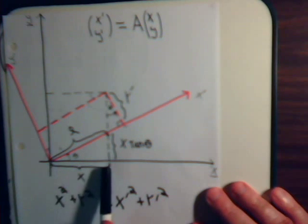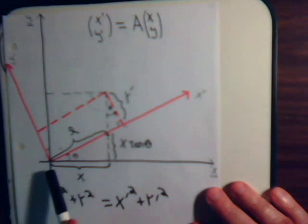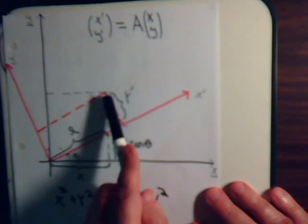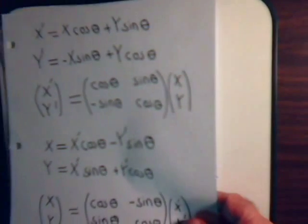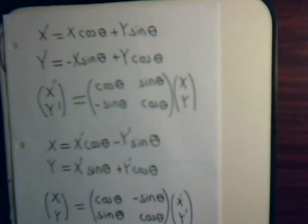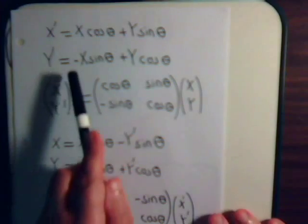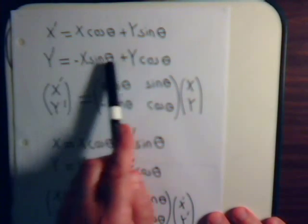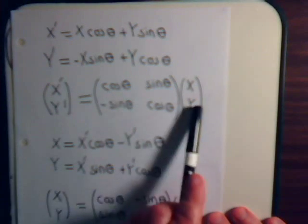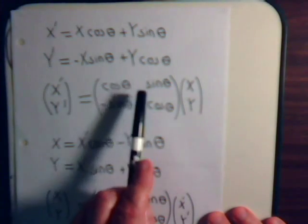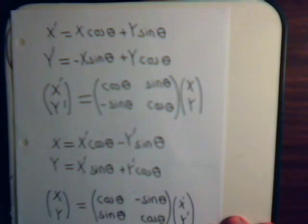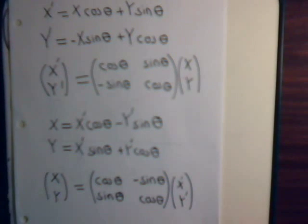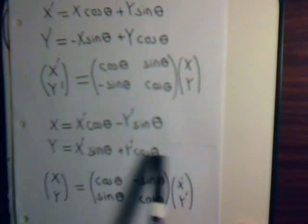So if we have a vector that goes from here to here, it will have x and y components, or x-prime and y-prime components. What we derived in videos number 30 and 31 were these equations. This relates x-prime and y-prime in terms of the x and y axis, or in matrix form. Once we derived these equations, it was simple enough to derive the equations that relate x and y to x-prime and y-prime, or expressing it in matrix form.